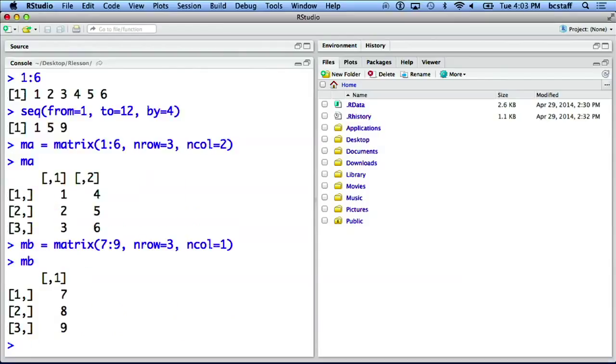Note that a matrix cannot contain multiple data types. In our case, ma and mb exclusively contain numeric values.